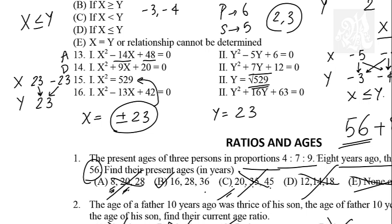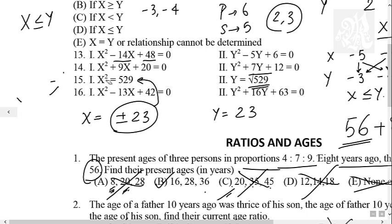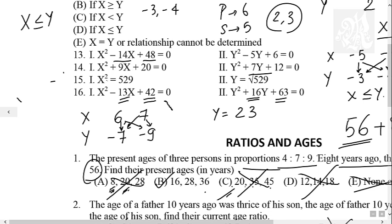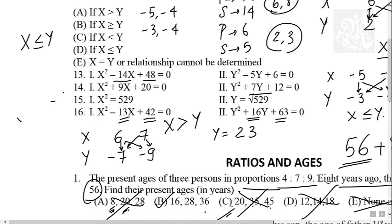Start comparing: minus 23 is less than 23, equal to — so x is less than or equal to y. Again option D. It's a jackpot if you get this question — five questions will hardly take one minute. Now the last question: x squared plus 13x plus 42. Product 42, sum minus 13, numbers 6 and 7, so x is 6 and 7. For y: product 16 times 63 gives minus 7 and minus 9 after negating plus 16. All comparisons: 6 > minus 7, 6 > minus 9, 7 > minus 7, 7 > minus 9. So x is greater than y — answer option A.